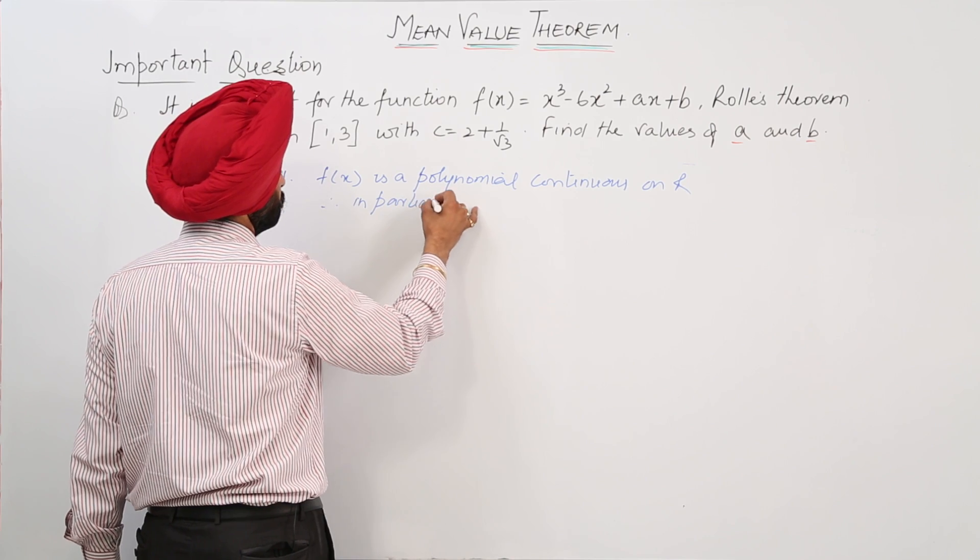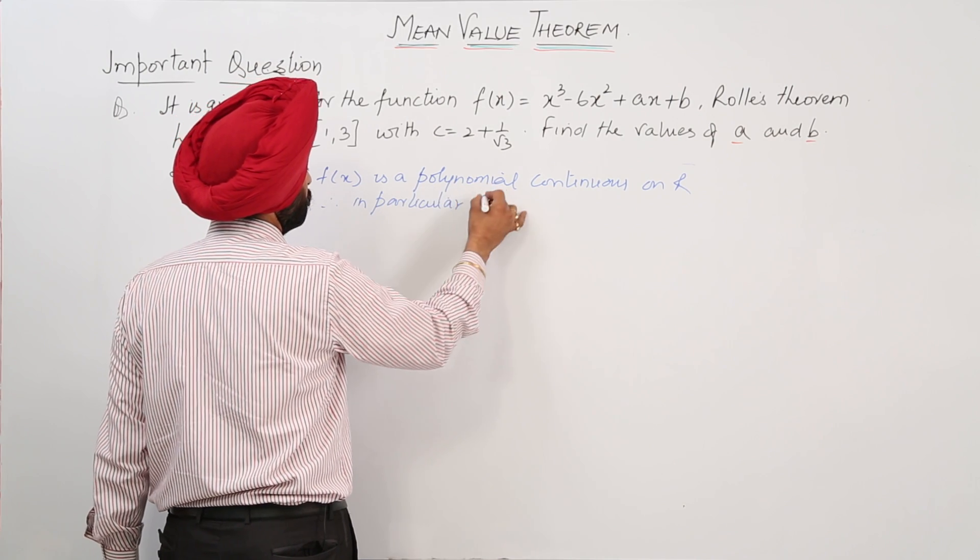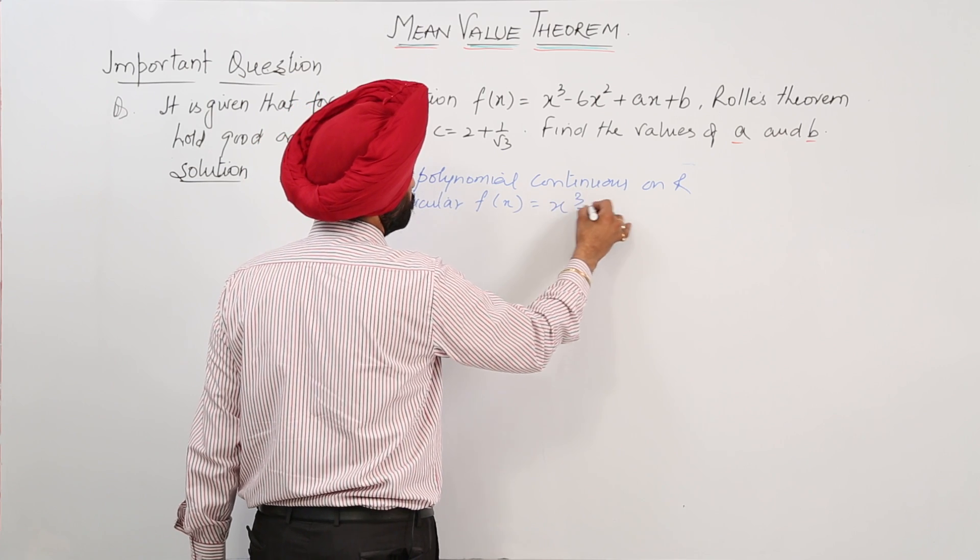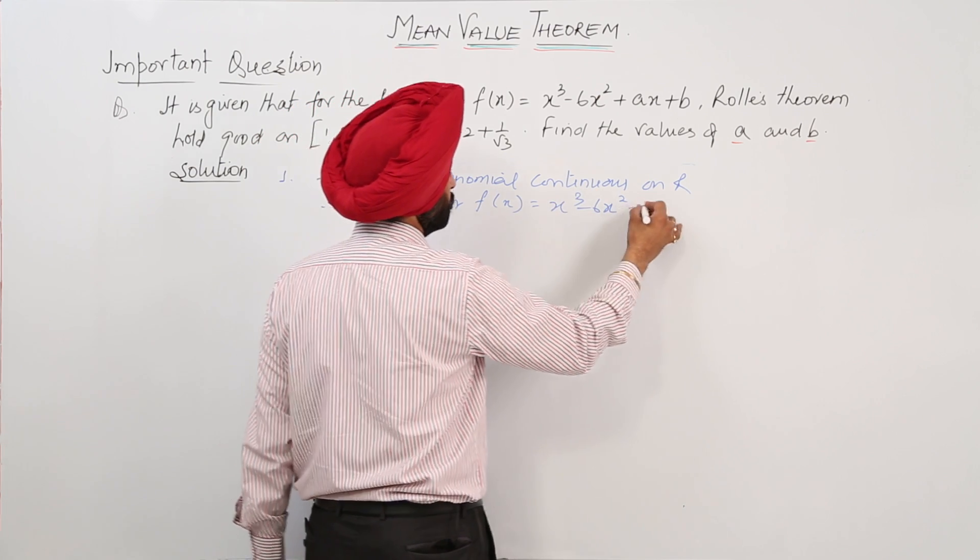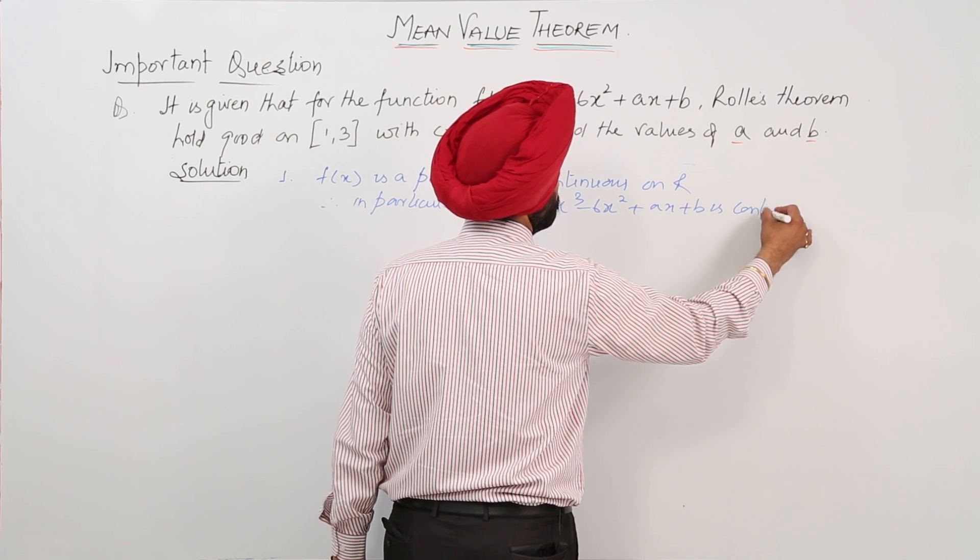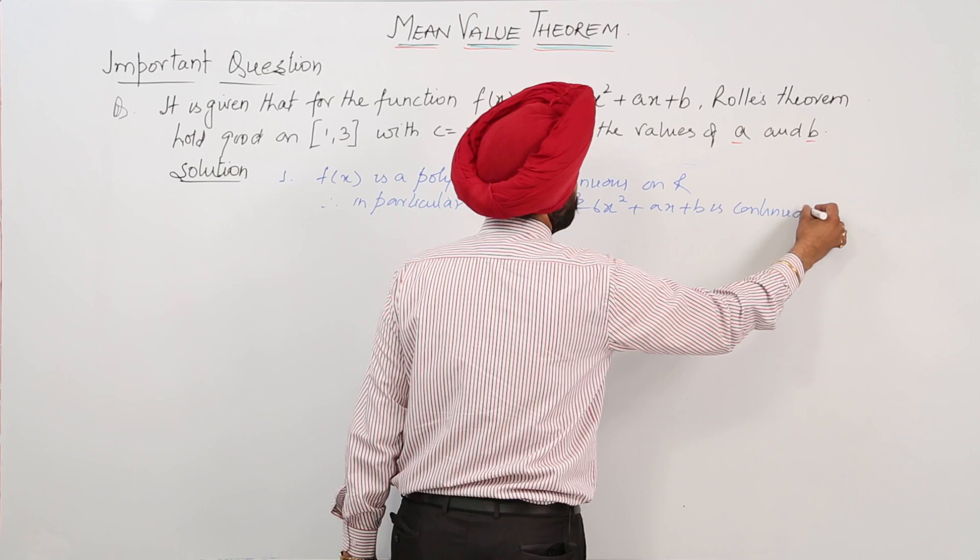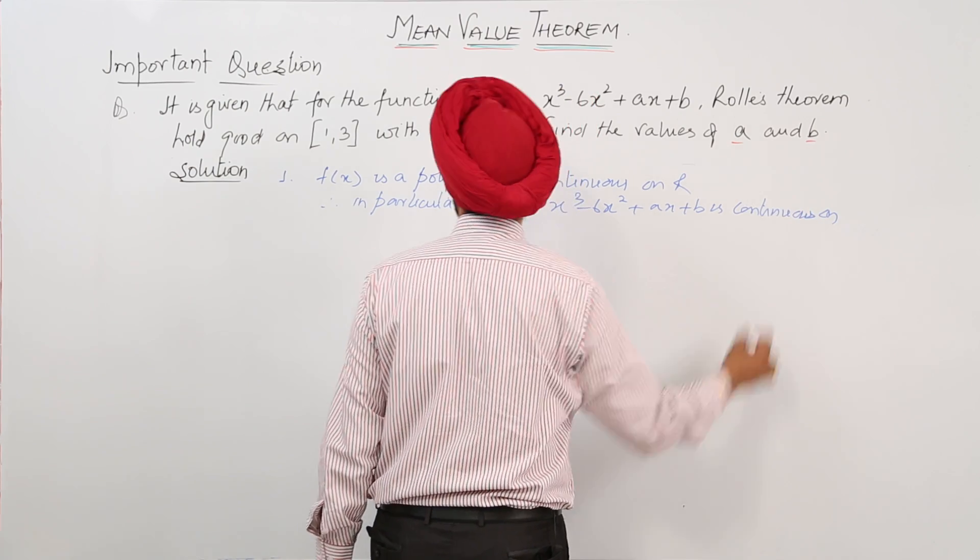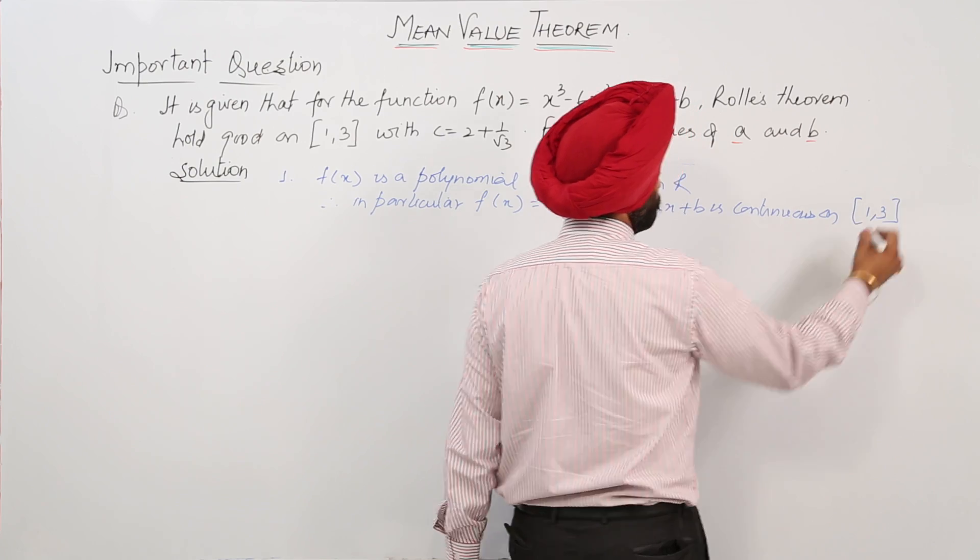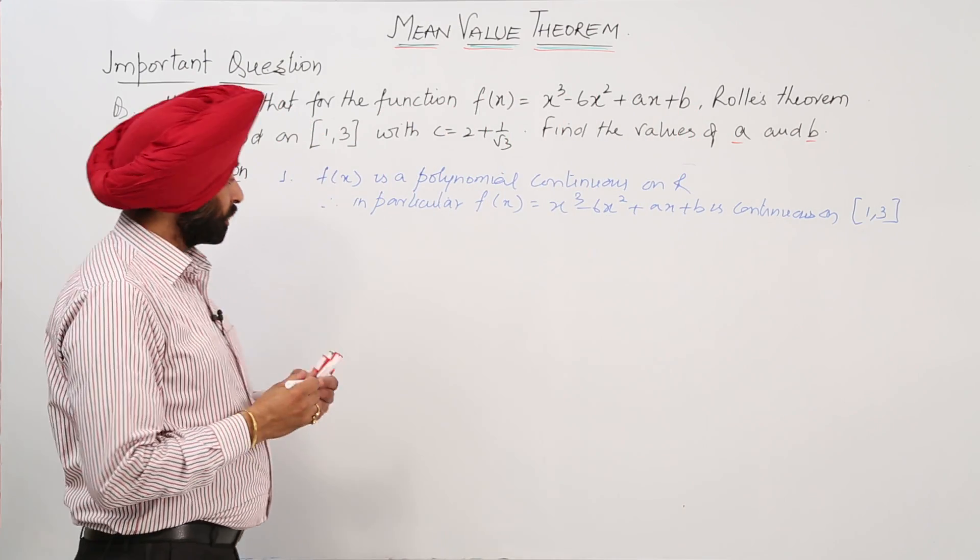In particular, f(x) = x³ - 6x² + ax + b is continuous on [1, 3], on the closed interval [1, 3].